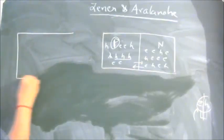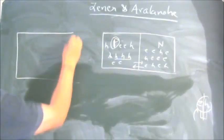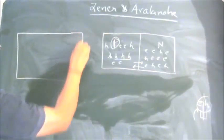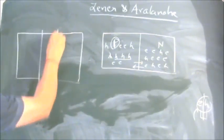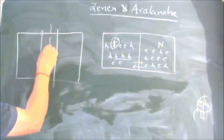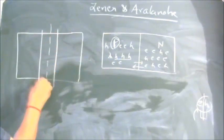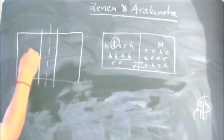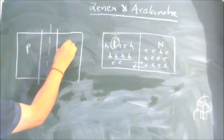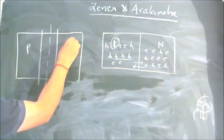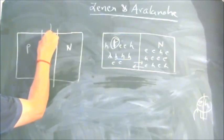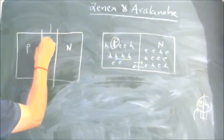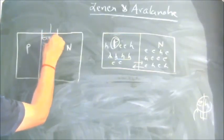In a diode, there is a depletion region at the junction boundary. On the P side we have negative charges and on the N side we have positive charges, with an electric field across the junction.